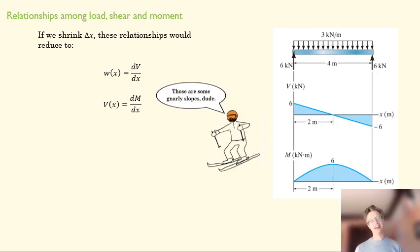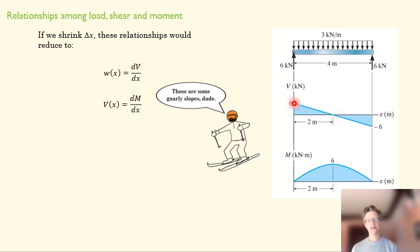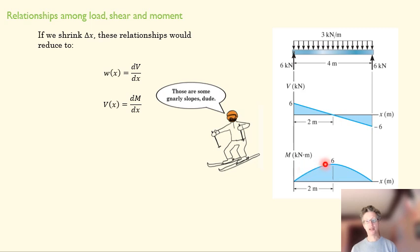So where does this help us? dV/dx is the slope of the shear diagram, so the slope of V(x) equals w(x), which here is constant and negative — giving a constant negative slope. And dM/dx = V tells us the slope of the moment diagram equals the shear. Initially the slope is positive and large, it becomes positive and small, reaches zero at the maximum, then becomes negative and small, and finally negative and large.